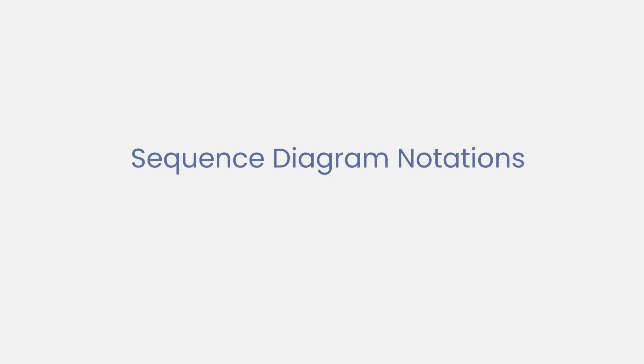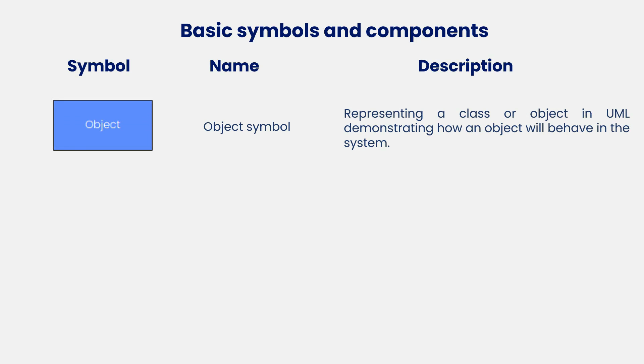Now let's learn more about the sequence diagram notations. Basically, sequence diagrams are made up of the following icons and elements. The object symbol represents a class or object in UML, demonstrating how an object will behave in the system.